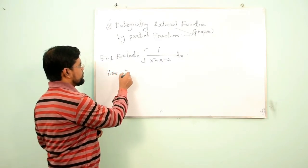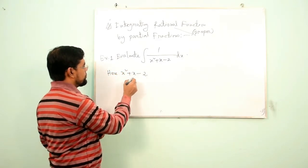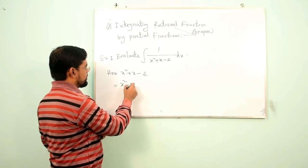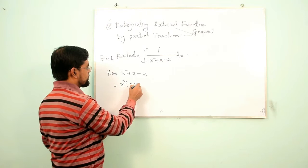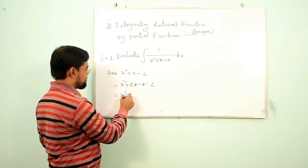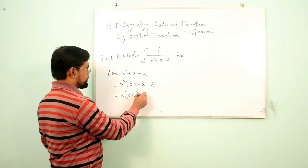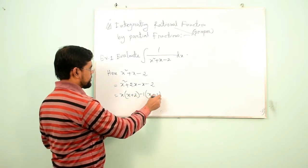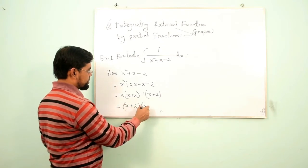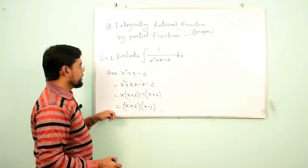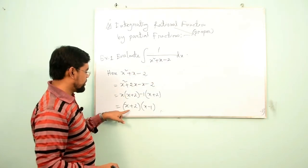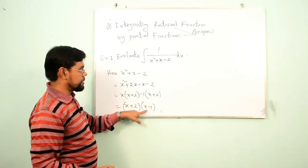Here x² + x − 2 = x² + 2x − x − 2, which equals (x + 2)(x − 1). So the factors of the denominator are (x + 2) and (x − 1).